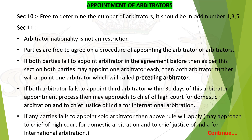Arbitral tribunal: either a single or panel of odd numbers of arbitrators — should not be even numbers. Court: the principal civil court of original jurisdiction is a district court and includes the High Court — it must have principal civil court of original jurisdiction. International commerce arbitration: any party in dispute who belongs to any foreign country or any party who has an international residence permit.